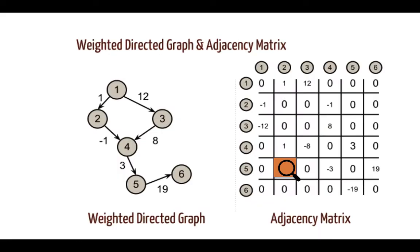One last quiz: we have a directed, weighted graph, and the question is what is the value in the square beneath the orange right angle? Because there is no connection between 5 and 2, the edge is 0.